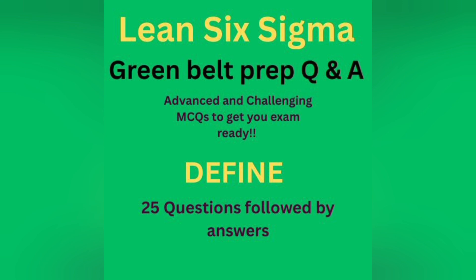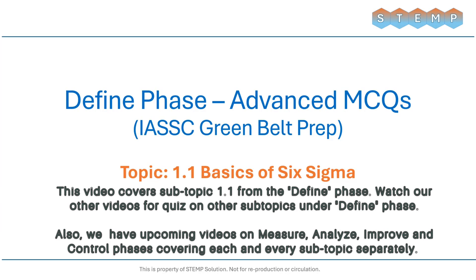Welcome. In this video you will find 25 carefully selected Green Belt Six Sigma multiple-choice questions designed to test your understanding and help you get exam ready. Each question comes with four answer options. We recommend you write down your answers on paper as you go through the video. At the end, we will reveal the correct answers so you can check your performance and identify areas to improve. Let's begin.